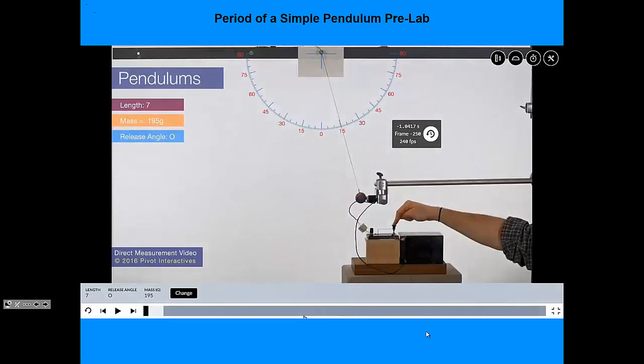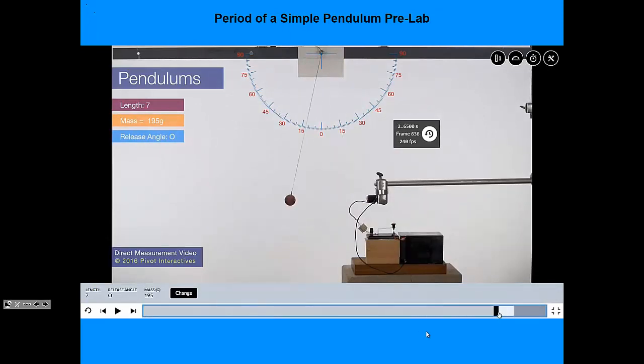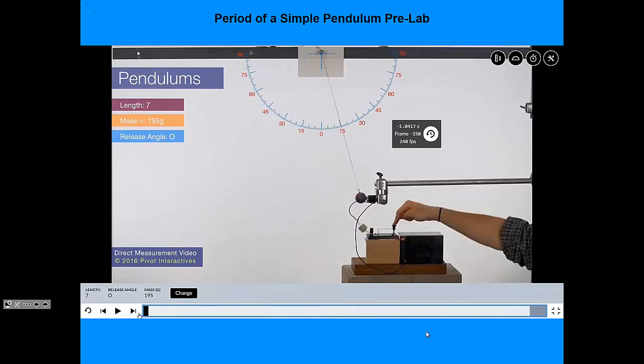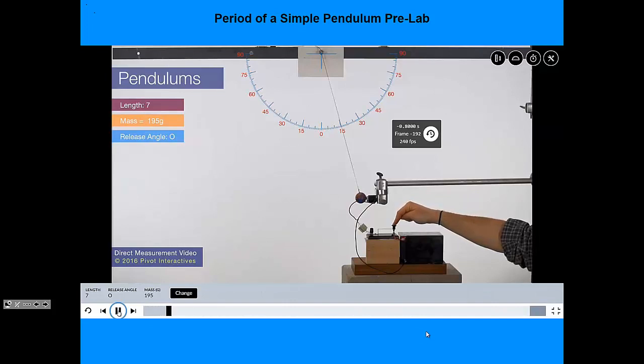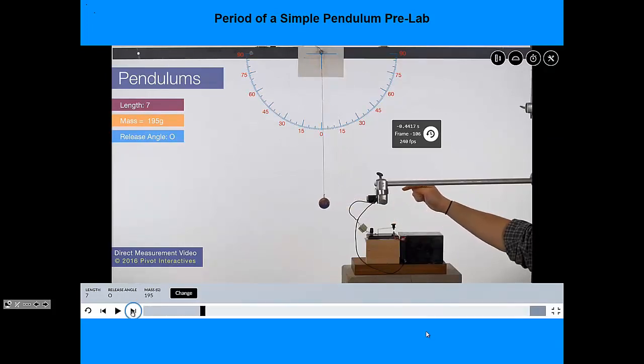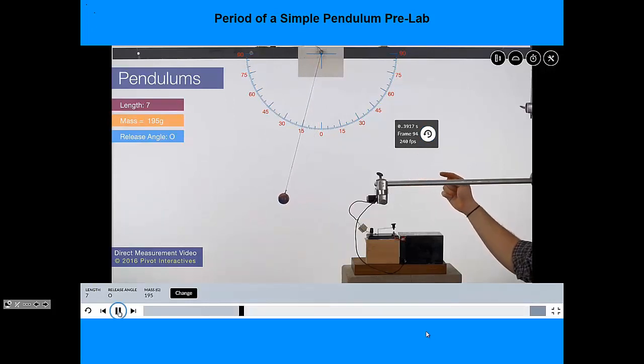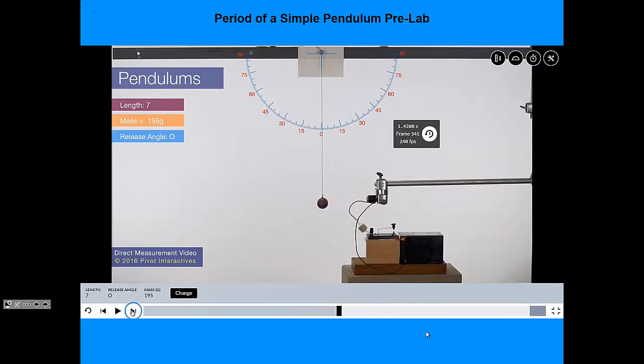What effect is that going to have on the period? Well, let's see. Run it again until it hits the zero. Make sure it's right on zero. Okay, zero the stopwatch. Run it. All the way out to 15 on that side. All the way back to 15 on the other side. And back to zero. Center it.